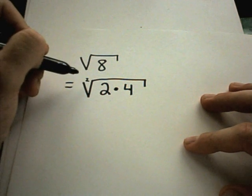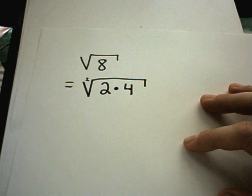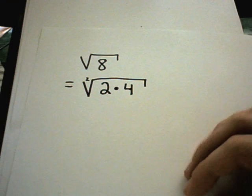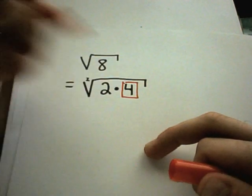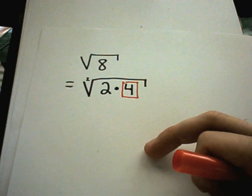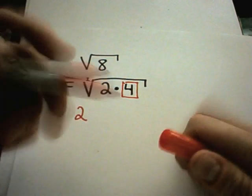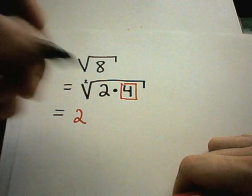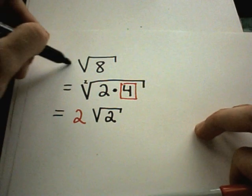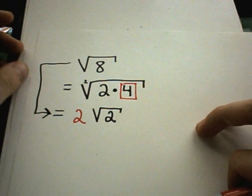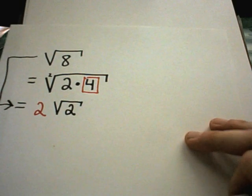What you do is factor the number underneath. I can write 8 as 2 times 4. I'm taking square roots, so if there's a number underneath that you can take the square root of, pull it out front. 4 has a square root. The square root of 4 is 2, and I'm still left with the square root of 2. This is the simplified version.